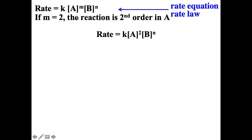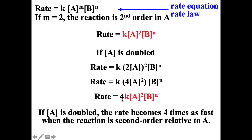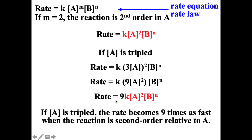If M equals two, the reaction is second order with respect to A. If we double the concentration, two gets squared, giving four times the rate. So if it's second order with respect to A and you double the concentration, the rate is four times as fast. If you triple the concentration, three gets squared, so the rate is nine times as fast.